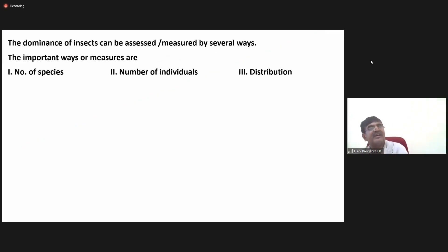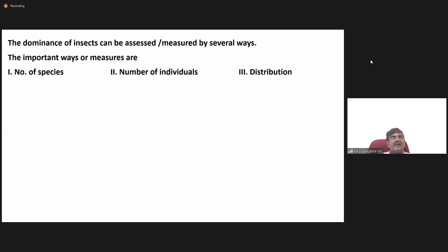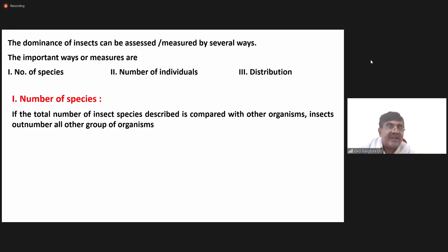The next important chapter is the major points related to dominance of insects in the animal kingdom — why insects are the most dominant in the animal kingdom and what are the reasons for this dominance. The dominance of insects can be assessed or measured in several ways. There are three important parameters: number of species, number of individuals, and distribution.